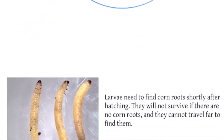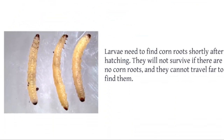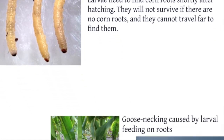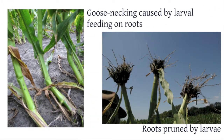Larvae will hatch the following spring and begin to feed on corn roots before pupating in the soil and emerging as adults. They're quite small and slender and can be tough to see in the soil after digging the roots out. The key element of their biology is that they need to find corn roots shortly after they hatch, and they cannot survive long or travel far to find corn roots. So lack of corn roots basically means death to the larvae.